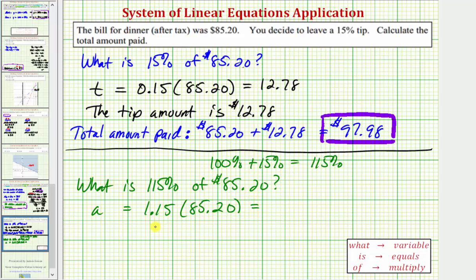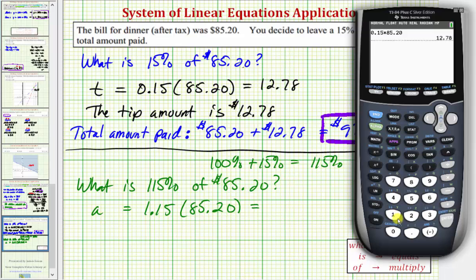And let's go back to the calculator one more time to verify. This will give us the total amount paid of 97 dollars and 98 cents. So 1.15 times 85.20, or just point two if we want, does give us a total amount paid in one step of 97 dollars and 98 cents.